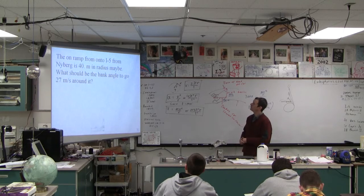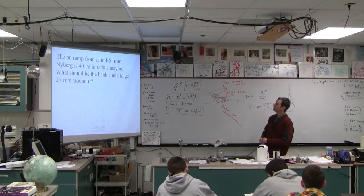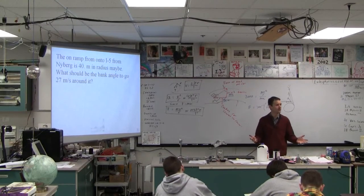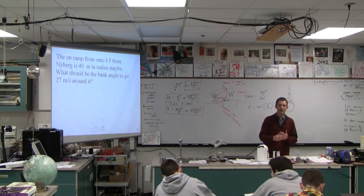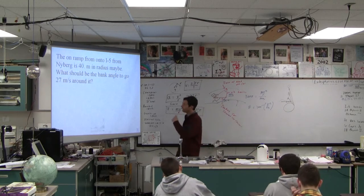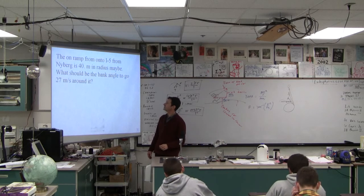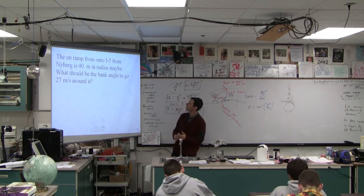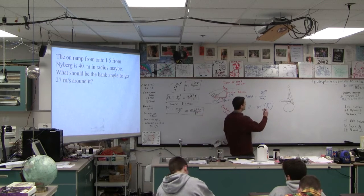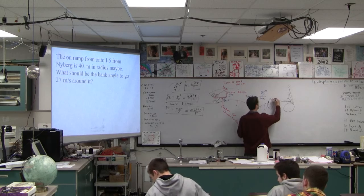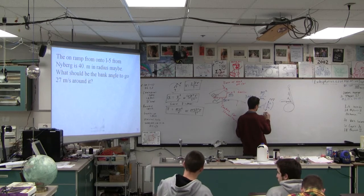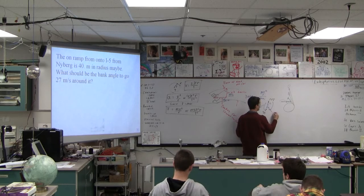Okay, so the on-ramp onto I-5 from Nyberg is 40 meters in radius, maybe. What should the bank angle be? So let's say we want to be able to go 60 around that corner. Don't you think we should be able to? Stuff that in your calculator, see if you can get the angle from it. This guy here put in 27, this guy here put in 40, this guy here put in 9.8.